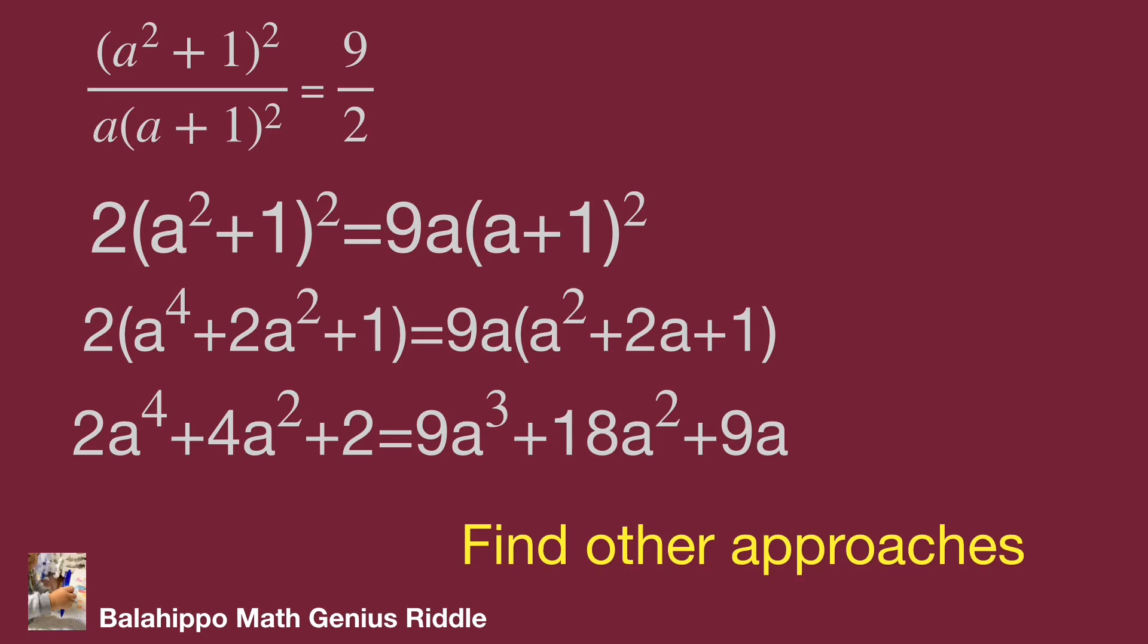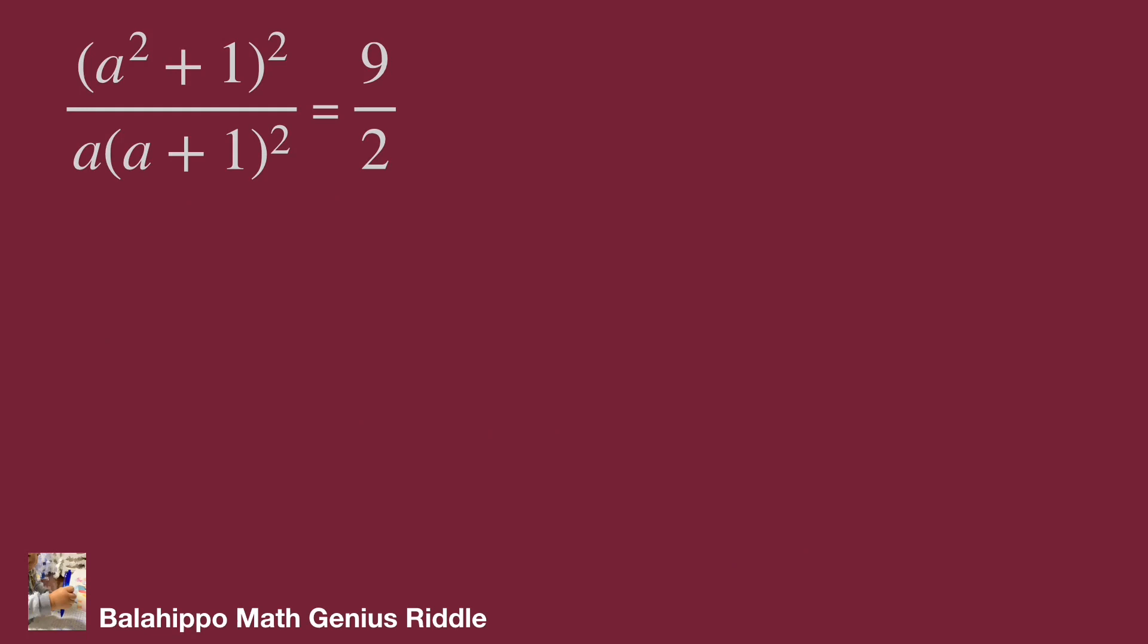So let's find other approaches. Back to the given equation: (a² + 1)² over a multiplied by (a + 1)² equal to 9 over 2. Treat a + 1 as a factor.